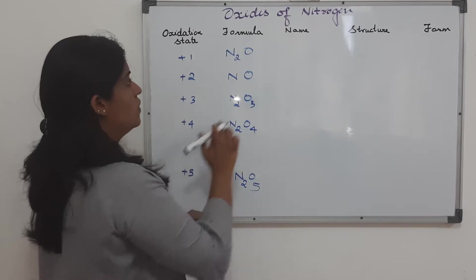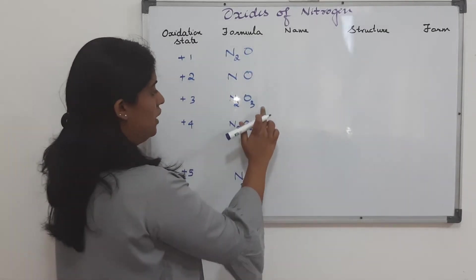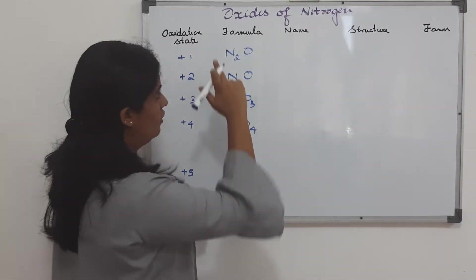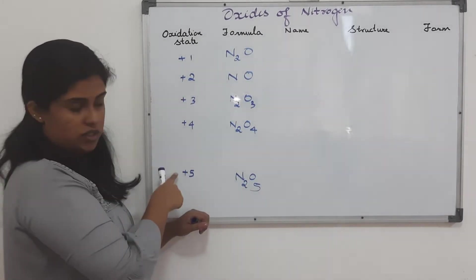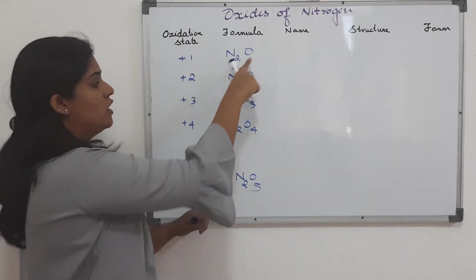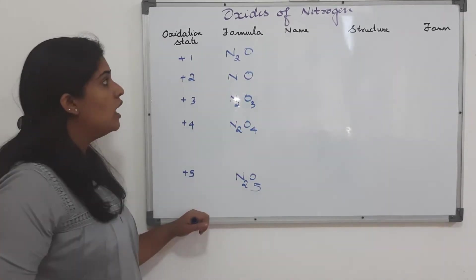1, 3, 4 and 5 follows like N2O, N2O3, N2O4, N2O5. All of them have 2 nitrogen. The number of oxygen atoms corresponds same as that of oxidation state. N2O, N2O3, N2O4, N2O5. Now, let's write the name.